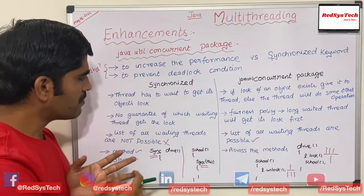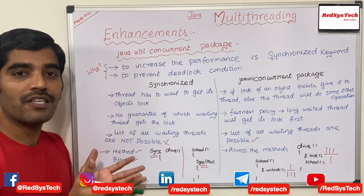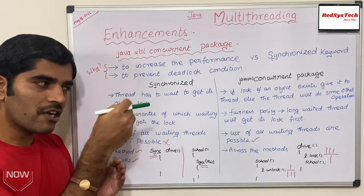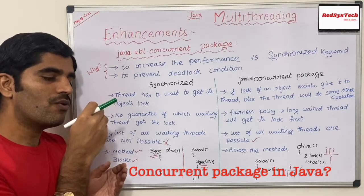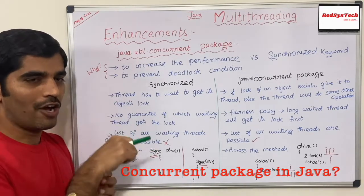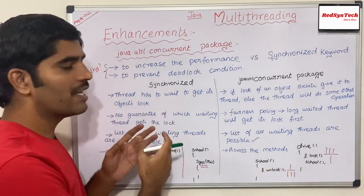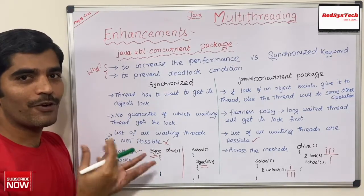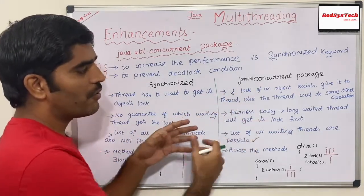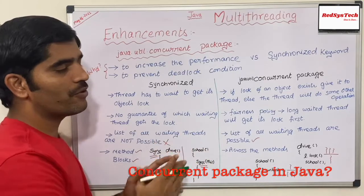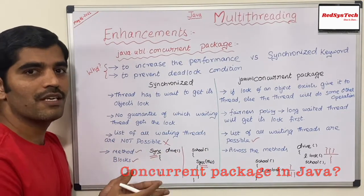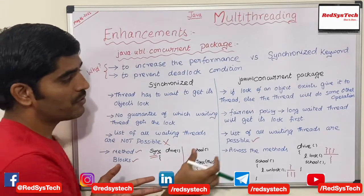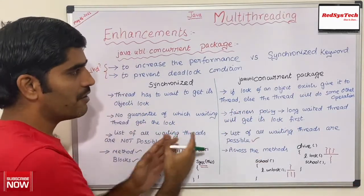The second difference: let's say five threads are waiting to get the lock, and the sixth thread releases it. With synchronized, there's no guarantee which waiting thread will get the lock — it's decided by the thread scheduler at the JVM level. But with the concurrent package, you can apply a fairness policy. When you define a fairness policy, out of the five waiting threads, the thread that has been waiting the longest gets the lock first.